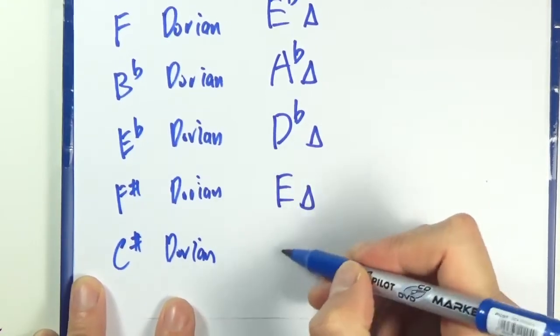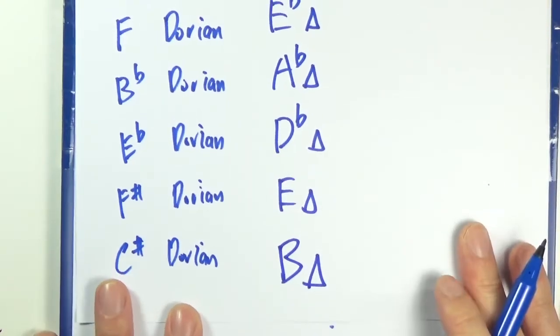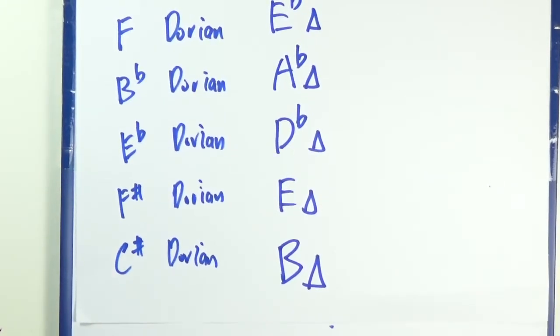Finally, C sharp - go down a whole step, B, so B major. All right, see you in the next exercise video.